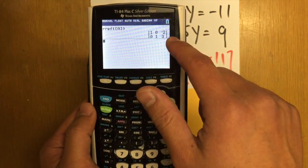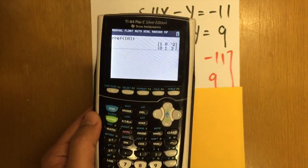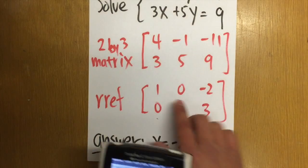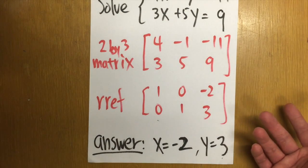And you see, this is the result that we have. 1, 0, negative 2, and 0, 1, 3, right? And this is what we get for RREF. 1, 0, negative 2, 0, 1, 3. And this is how we read the answer.